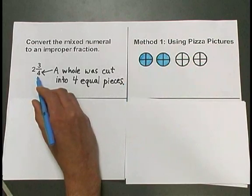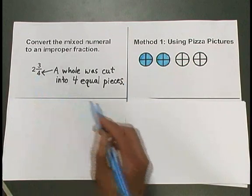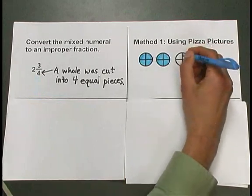The fractional part, 3 fourths, tells me to shade 3 pieces of another pizza that was cut into 4 equal pieces.